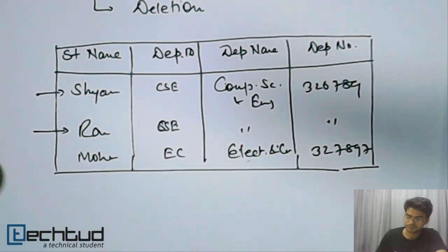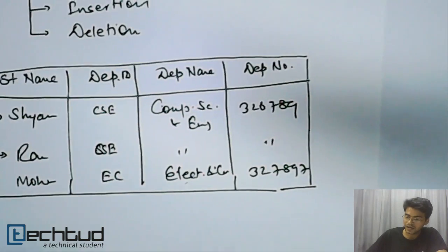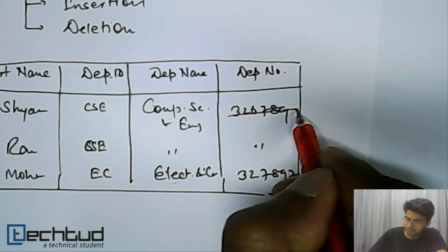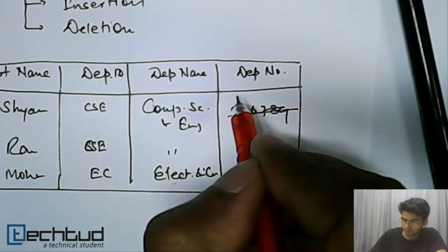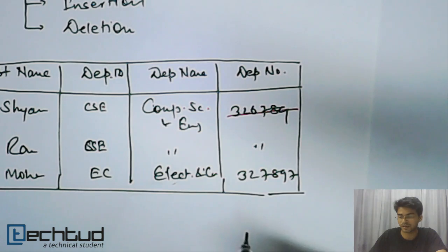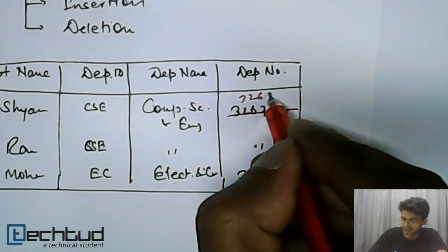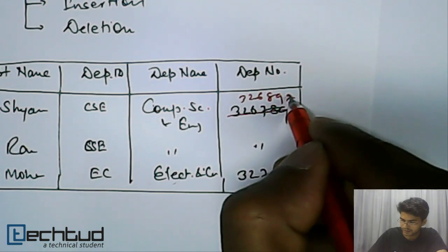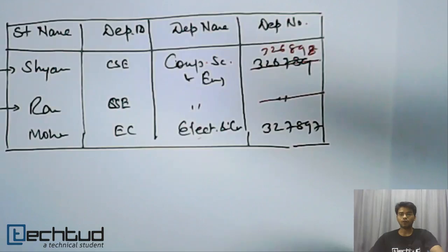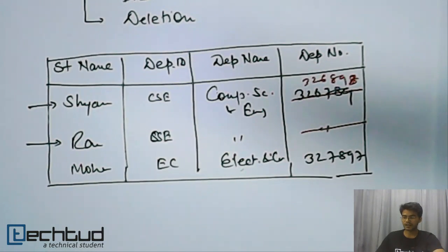Update anomalies: let's say I have to update the phone number of computer science department. In this case I have to take care of all the updation - all the phone numbers corresponding to computer science department. Let's say I am updating it to some 326898. Again here also I have to update this. All the phone numbers across this computer science department I have to update.